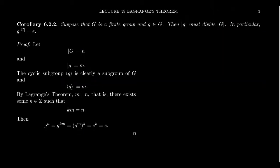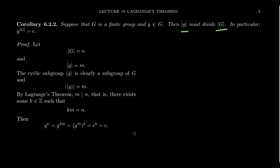Now let's look at the corollaries. Suppose G is a finite group and g is an element of G. Then the order of an element divides the order of G. In particular, if you take an element to the power of the order of the group, you always get back the identity. The order of little g may not equal the order of G, but raising an element to any multiple of its order gives the identity.